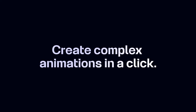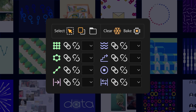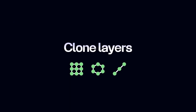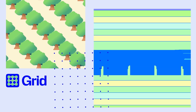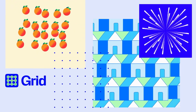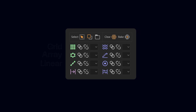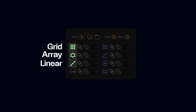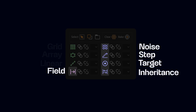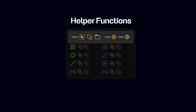MoGraph AE allows you to create complex animations quickly. It works using two types of controllers. There are cloners, which duplicate and arrange layers in a specific formation, and there are effectors, which allow you to animate these layers. There are also a number of helper functions which will come in handy when managing large amounts of layers.